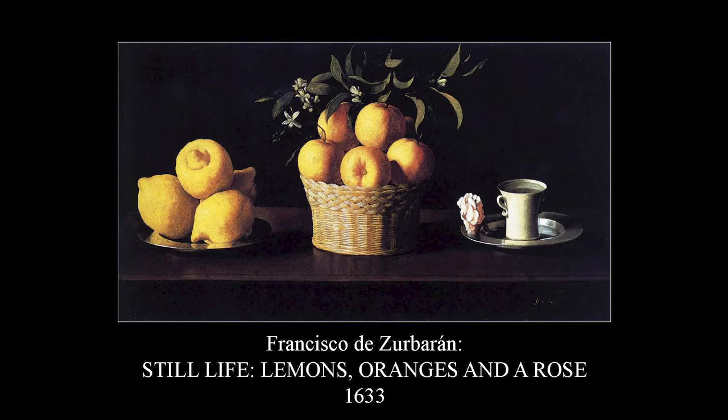Another painting by Zurbarán is completely different — this is a still life, and it is not religious. There is no message here. It's a still life showing lemon, oranges, and a rose, done with that chiaroscuro effect — a strong light coming from one side, bringing the objects forward to the viewer against a dark background.